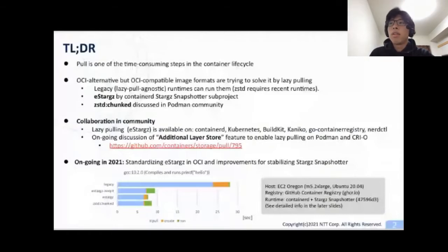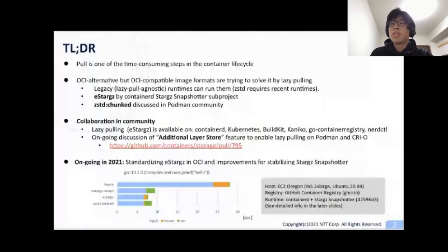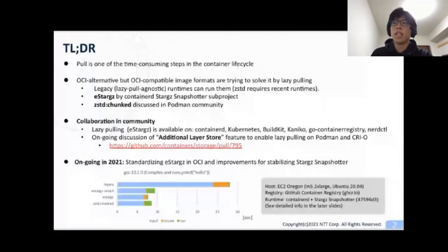The following diagram shows the time to take for startup of the Python 3.9 image from GitHub Container Registry. This shows eStargz and zstd-chunked shorten the time to take for pull by lazy pulling. We will discuss about it in more detail in this talk.